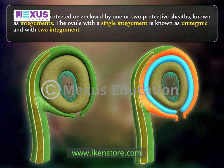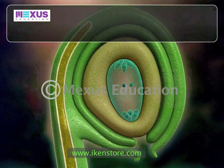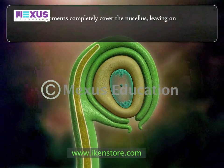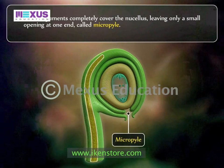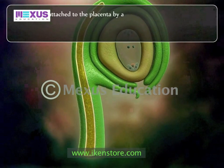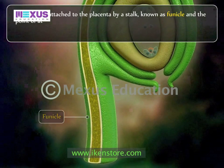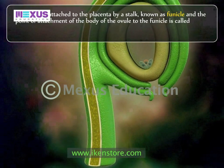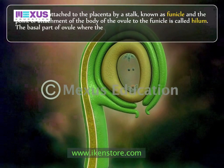An ovule with two integuments is known as bitegmic. The integuments completely cover the nucellus, leaving only a small opening at one end called the micropyle. The ovule is attached to the placenta by a stalk known as the funicle.